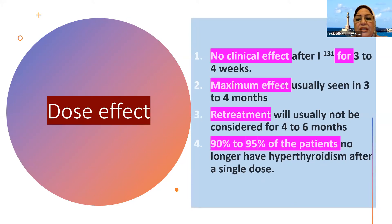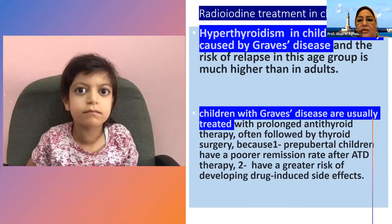The dose effect of radioactive iodine includes no clinical effect for 3 to 4 weeks, with maximum effect usually at 3 to 4 months; re-treatment will usually not be considered for 4 to 6 months. 90 to 95% of patients no longer have hyperthyroidism after a single dose. In children, radioactive treatment is common as hyperthyroidism is most commonly caused by Graves' disease, and the risk of relapse in this age group is much higher. Children are usually treated with prolonged antithyroid therapy, often followed by thyroid surgery, because prepubertal children have a poor remission rate and a greater risk of drug-induced side effects.